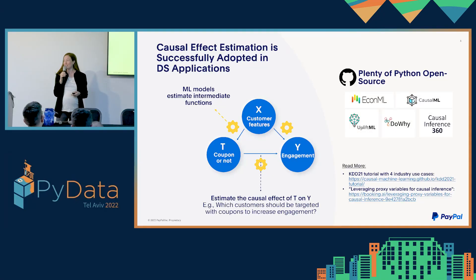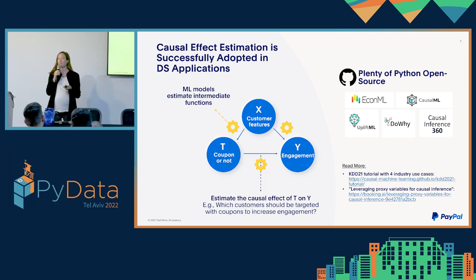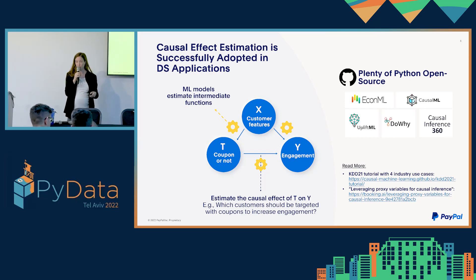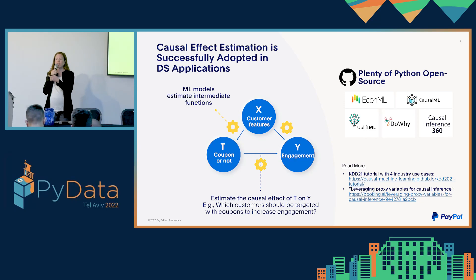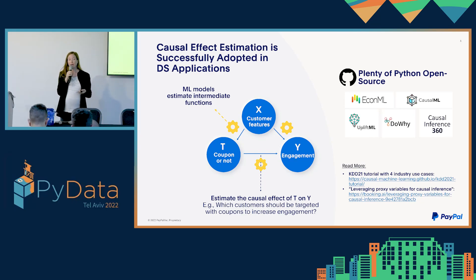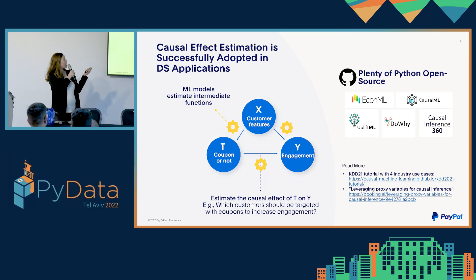Remember the coupons example? Estimating the causal effect of sending a coupon to a customer on her engagement can help us identify the best target audience for our marketing campaign. Where is the machine learning? Machine learning models are integrated within the causal inference framework and they are helpful especially with big and high dimensional data — they are estimating intermediate quantities within this formulation. Causal effect estimation is being used by many industry leaders and it's already providing business value, as evidenced by the great availability of Python open source packages implementing these methods.